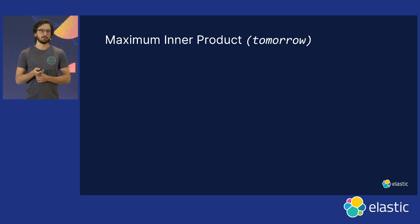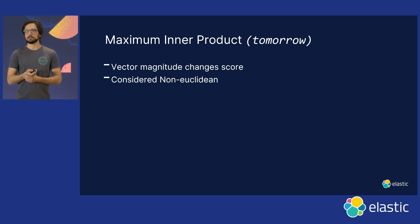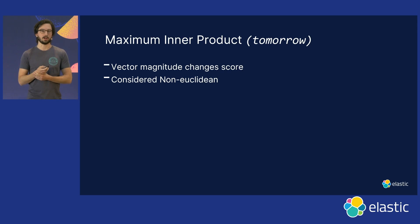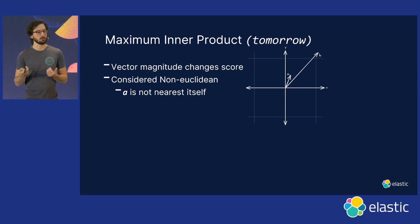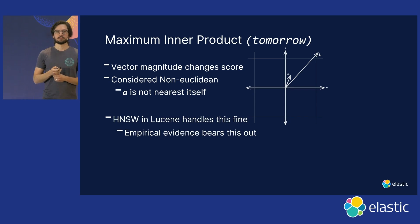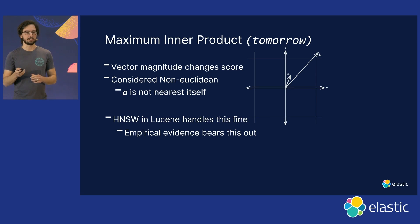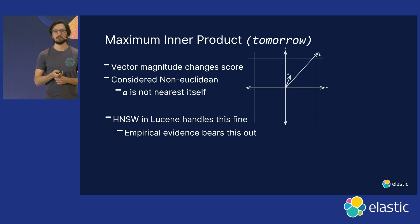One other thing we've been working on coming out soon is maximum inner product. Maximum inner product is a calculation where the magnitude of the vector adjusts the score. For cosine similarity it's a simple Euclidean space calculation, but for maximum inner product it is non-Euclidean, meaning a vector is no longer closest to itself and distance isn't simple to think about intuitively. But models handle this exceptionally well and so does HNSW. There's an open-source GitHub issue with hundreds of comments of research between us and other Lucene committers to make sure this works — and it does. It's in Lucene now and will be in Elasticsearch soon.